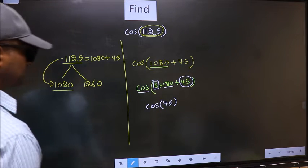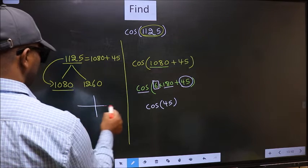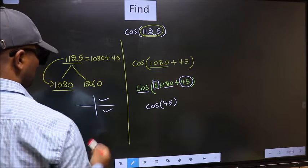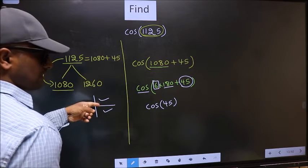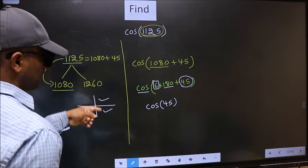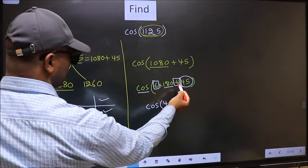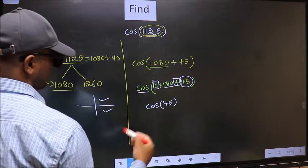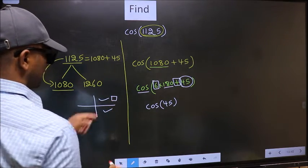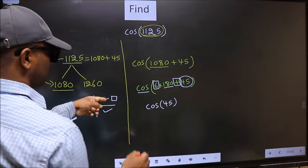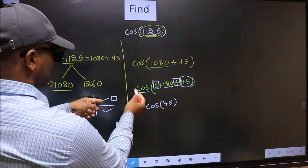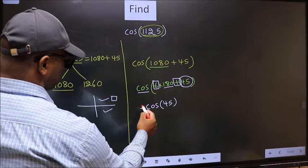So now to select the quadrant, we should look at this symbol. Here we have plus. That means the angle lies in the first quadrant. And in the first quadrant, cos is positive. So we should put plus.